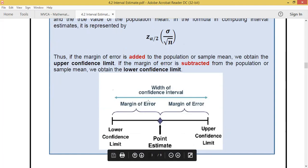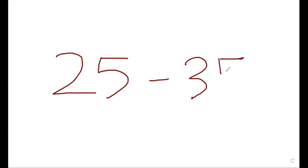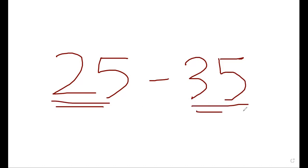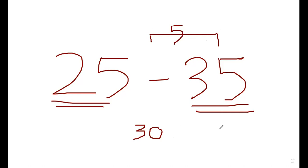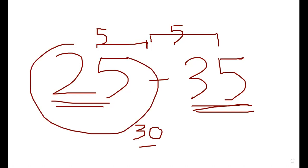If you subtract the margin of error from the point estimate, you get the lower confidence limit. For example, when guessing the teacher's age, the answer was 25 to 35 — 25 is the lower confidence limit and 35 is the upper confidence limit. The true value is 30, so there is a margin of error of 5: add 5 to get 35 (upper), subtract 5 to get 25 (lower).